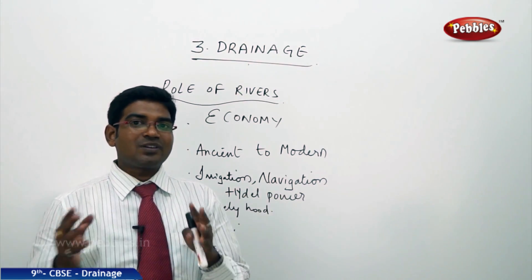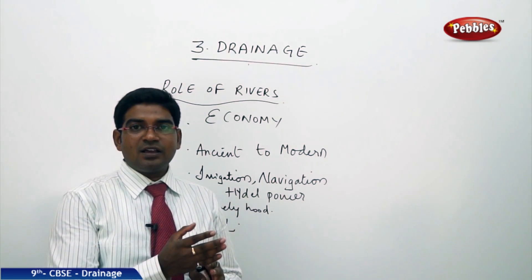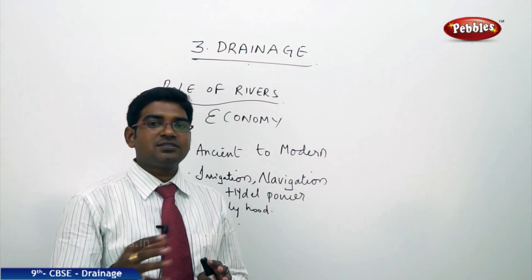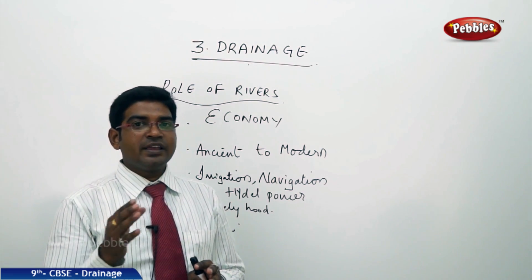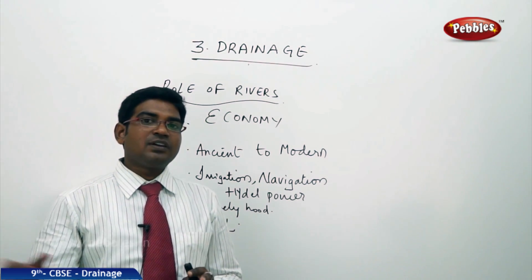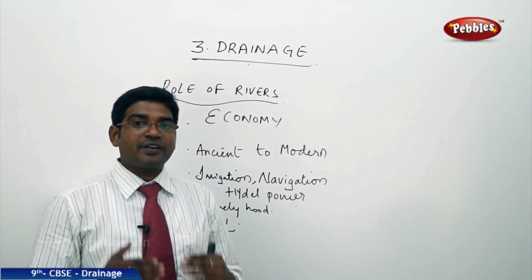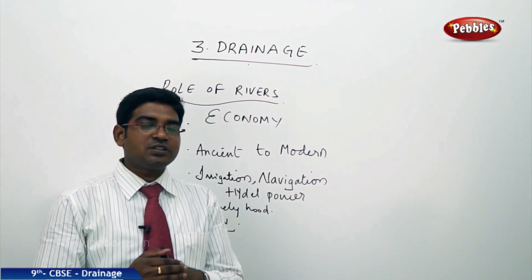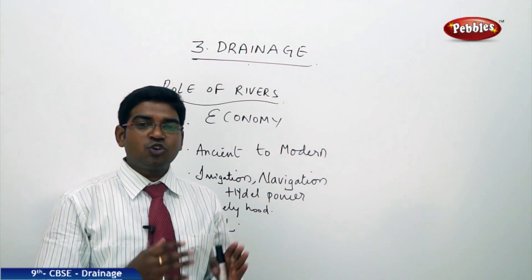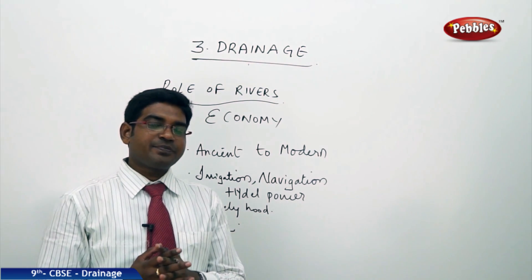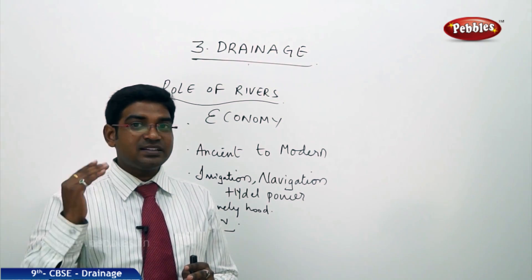The river starts to cleanse itself. For example, take the river Ganga. River Ganga takes the effluents with it, and within 20 kilometers of the city itself, it tries to cleanse itself and make the water clean for the next stretch. But because of rapid industrialization and urbanization, the output of waste and chemicals is rapidly increasing, which is reducing the capacity of the river to cleanse itself.